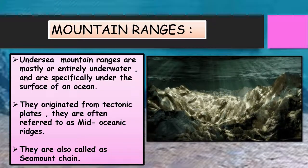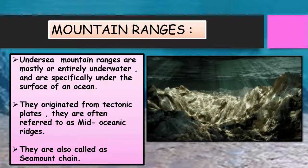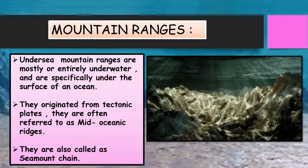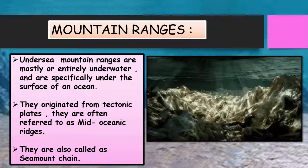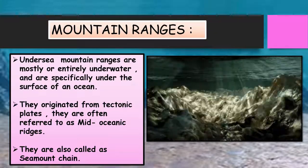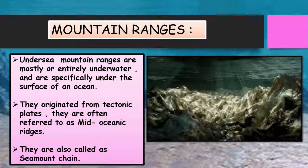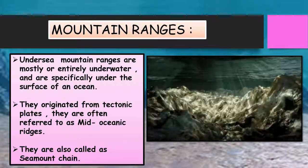Undersea mountain ranges are mountain ranges that are mostly or entirely underwater, specifically under the surface of an ocean. When mountains or hills are arranged in a line and connected by high ground, a mountain system or mountain belt is a group of mountain ranges with similarity in form, structure, and alignment. Mountain ranges have originated from tectonic plates — tectonics being the process that controls the structure and properties of the earth's crust and its evolution through time. Tectonic plates are often referred to as mid-ocean ridges, also called seamount chains.